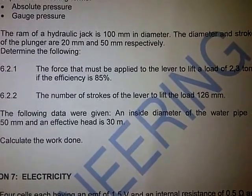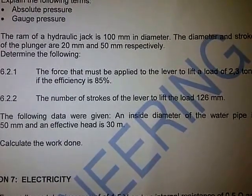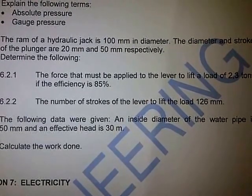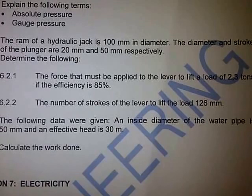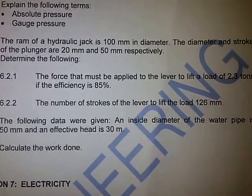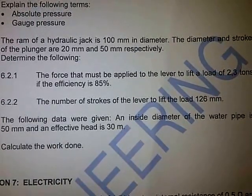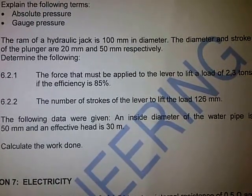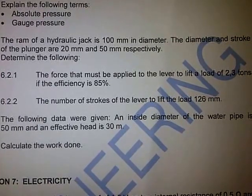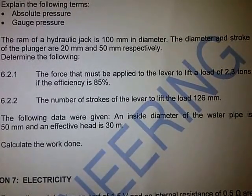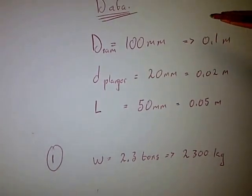The ram of a hydraulic jack is 100 millimeters in diameter, and the diameter and stroke of the plunger are 20 millimeters and 50 millimeters respectively. Determine the force that must be applied to the lever to lift a load of 2.3 tons, if the efficiency is 85 percent.